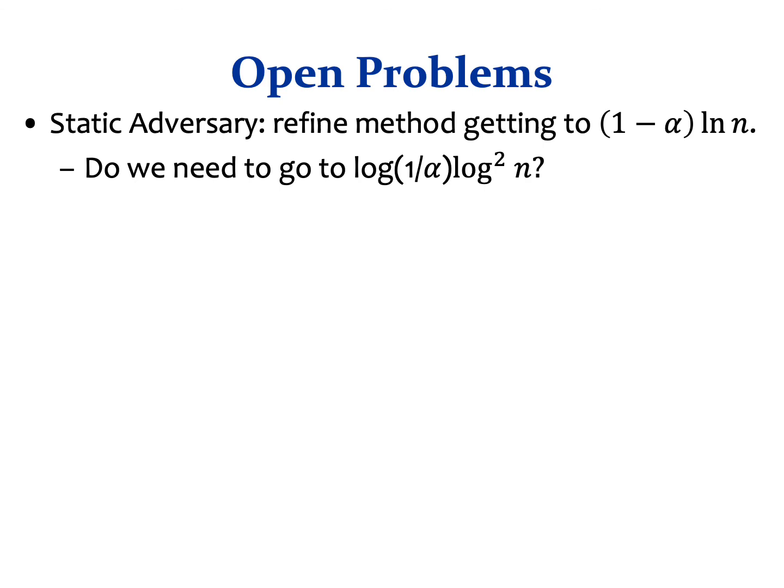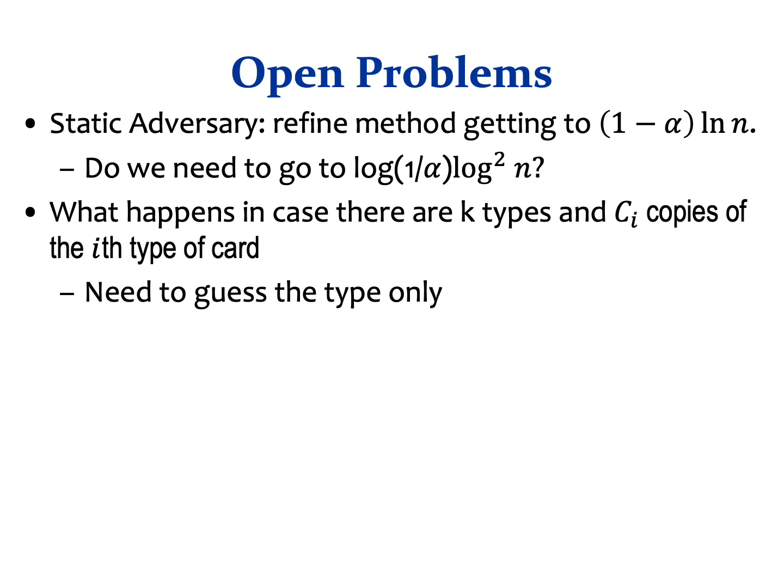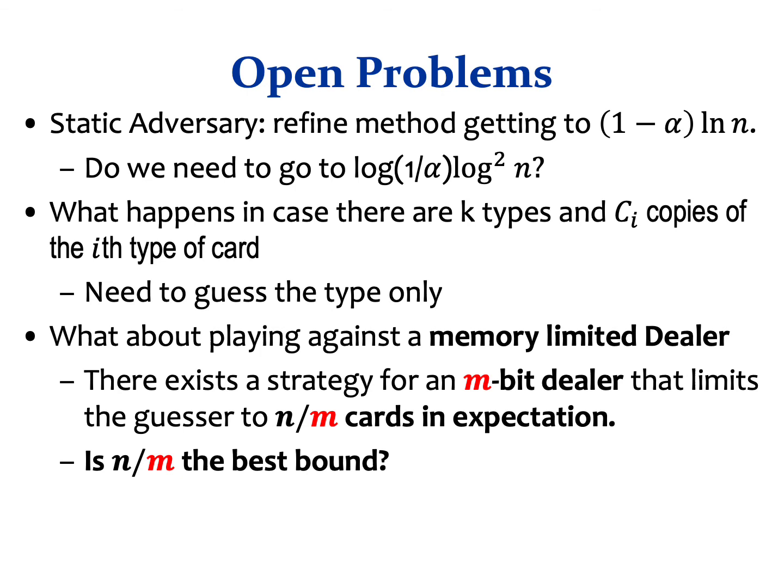Here are some open problems. To amplify our guesser against the static dealer, we paid a log factor in order to get closer to ln M, but perhaps there is a finer way. It is also interesting to see what happens when there are multiple copies of each card — our low memory techniques do not scale with the number of copies, and if there are too many copies a memoryless guesser can outperform our low memory guesser. What happens if the dealer and guesser switch roles and the dealer is memory bounded, so she doesn't remember which cards are available and may not draw the same card twice? There exists a strategy for an M-bits dealer against which any guesser makes N over M correct guesses in expectation, but we do not know if this is optimal.